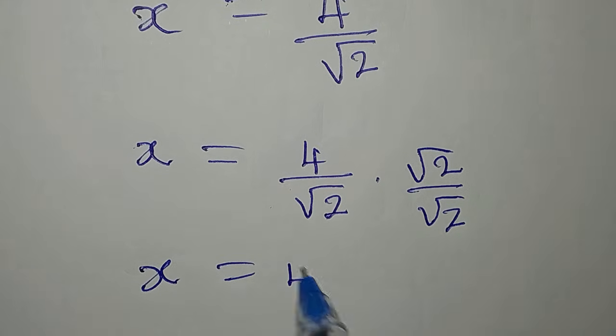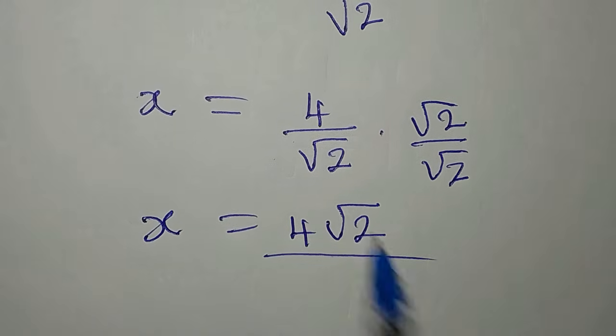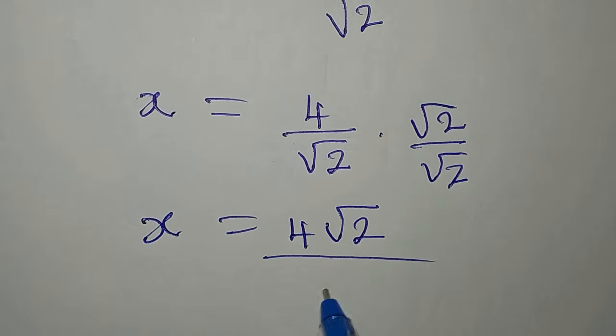4 times root 2 is 4 root 2 and not root 8. Then divide this by root 2 times root 2 is 2.